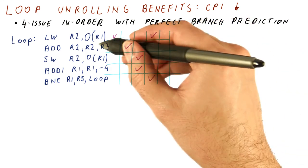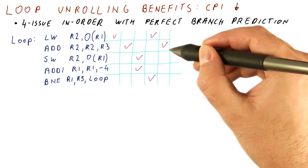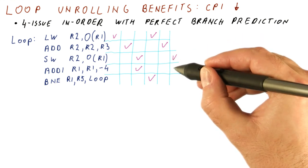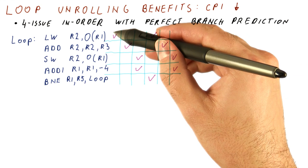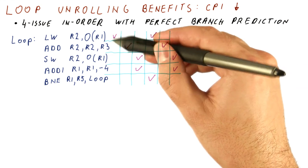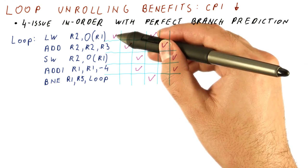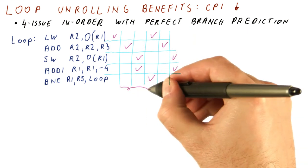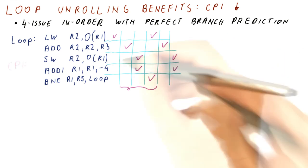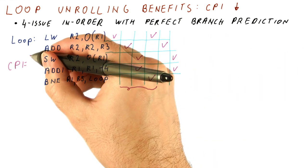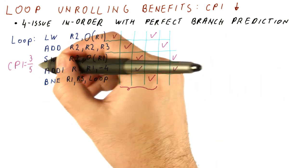And then we will, again, not be able to do the add. So the add happens in the next cycle, and then in this cycle, these two happen, and so on. So overall, after this initial load that had to be done by itself just because there was no branch before it, it takes us three cycles to do all five of the instructions in the loop. So the CPI here is three cycles for five instructions.